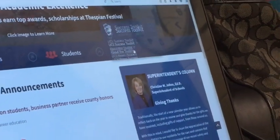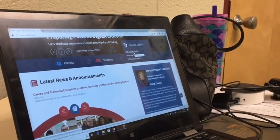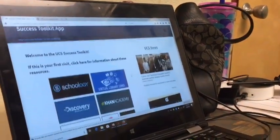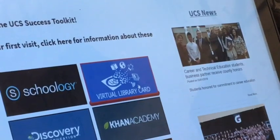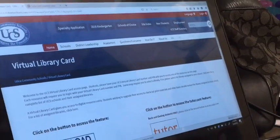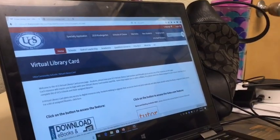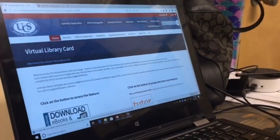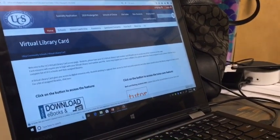We're going to click on the Success Toolkit and then we're going to click again to the link that will take us directly to the virtual library card. Now you get your virtual library card from your Media Center teacher. She gave it to you on a little piece of paper, but you can also go to your public library and get a library card.